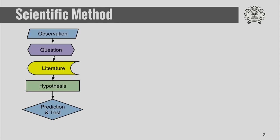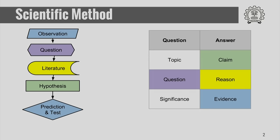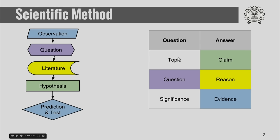How is this related to what you write? When you write, we have shown in a separate lecture that the essence of technical communication can be summarized by two statements: one is a question and the other is an answer. The question is structured as a topic, question, and significance; and an answer has a claim, reason, and evidence.